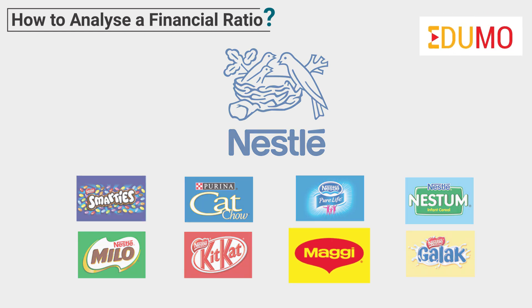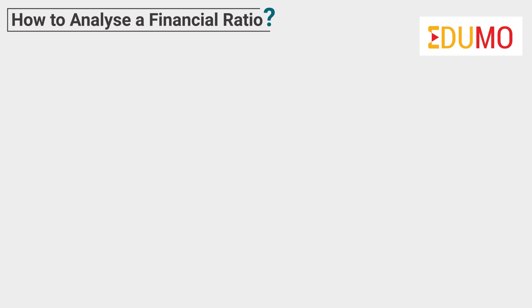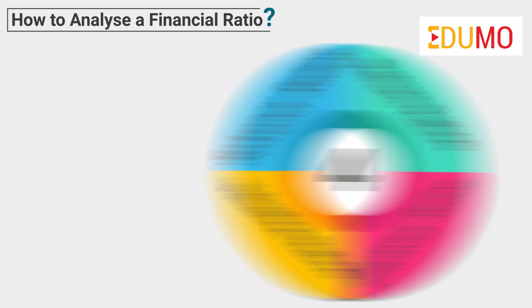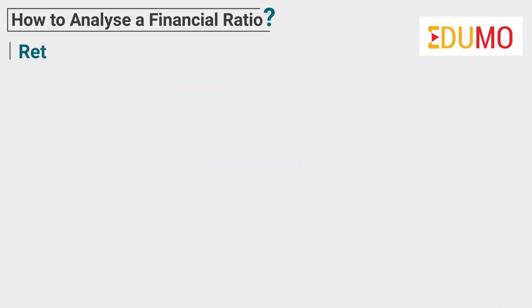So let's get started on how to analyze some of these financial ratios. Financial ratios can be majorly classified into four categories. First is the return ratios.